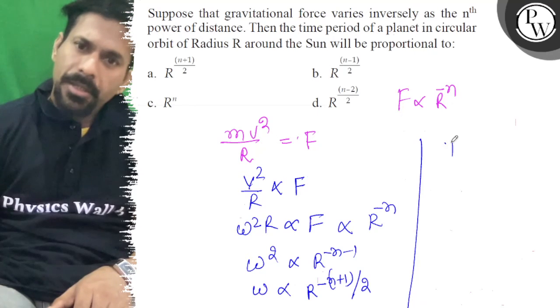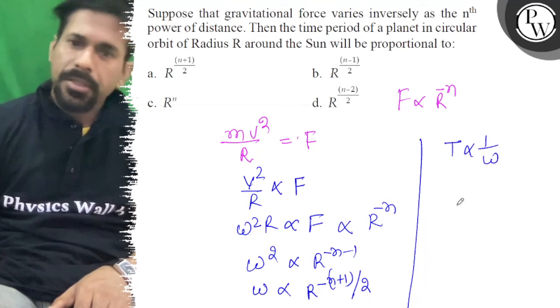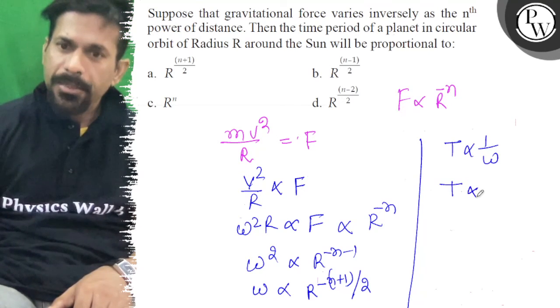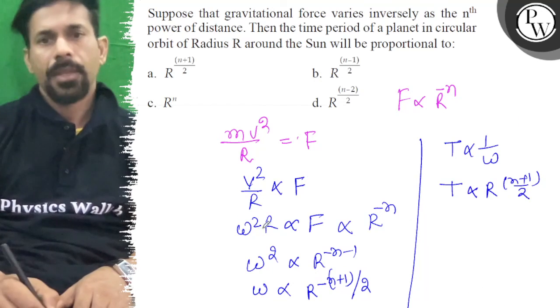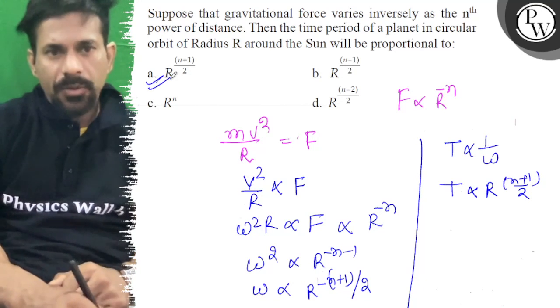And we know that time period is inversely proportional to omega. So time period is directly proportional to r to the power n plus 1 by 2. So the right answer is option B. All the best.